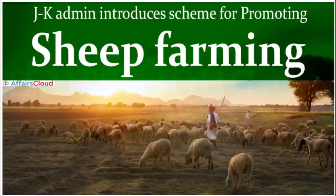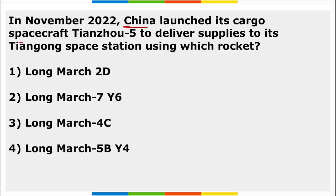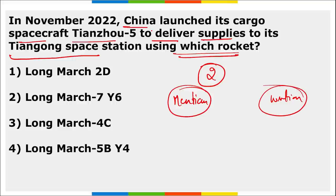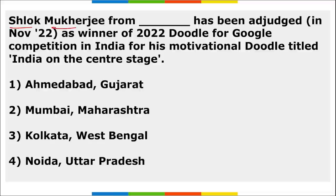Jammu and Kashmir is promoting sheep farming. In November, China launched its cargo spacecraft Tianzhou-5 to deliver supplies to its Tiangong space station. The modules sent include the Mengtian and Wentian space modules. The rocket used to launch the Tianzhou-5 cargo spacecraft to the Tiangong space station was the Long March 7 Y6 rocket.